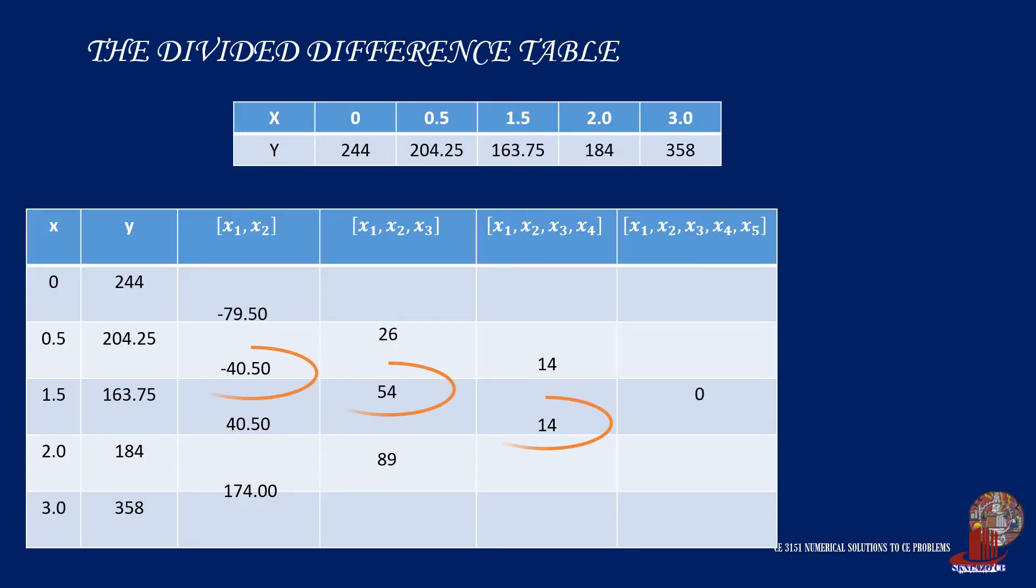Another track of leading differences is the next trend, as it also has three terms. This time, x0 is taken as 0.5, and y0 is 204.25. Then the leading differences are negative 40.50, 54, and 14.